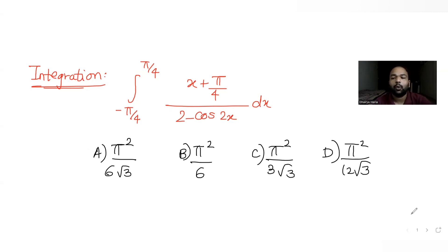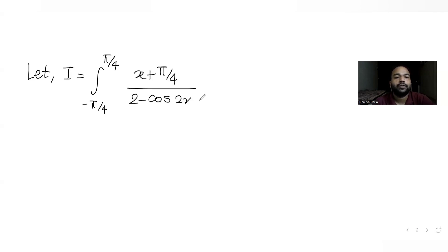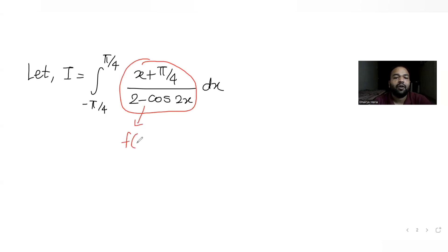Let's say I is the integral for which we have to find the value. The expressions given are (x + π/4) in the numerator and (2 - cos2x) in the denominator. We need to find the value of this entire integral I. Let's call the entire expression a function of x, f(x), and use the property of definite integrals.